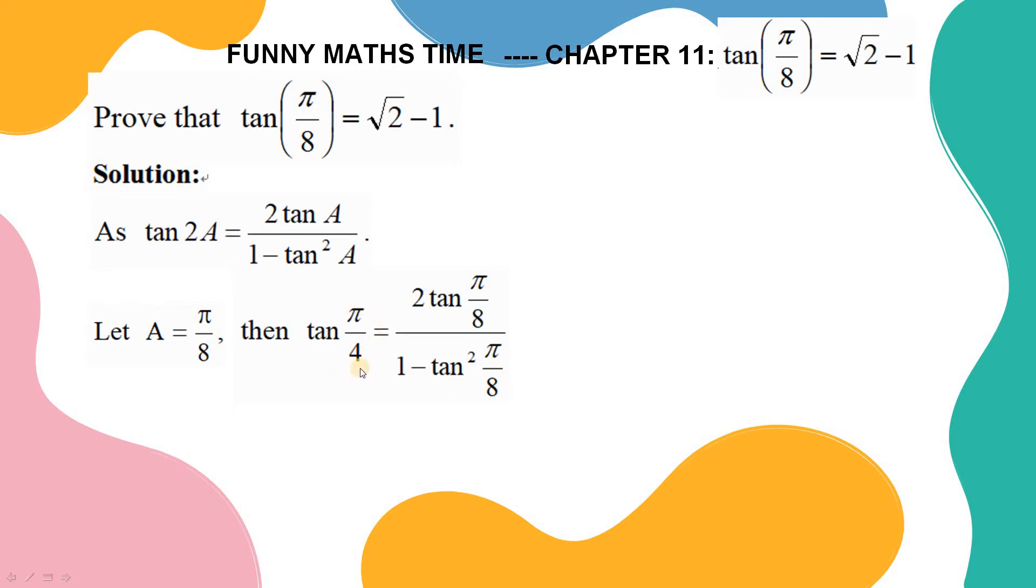For tangent pi over 4 is equal to 1. Multiply the denominator from the right to the left. We have 1 minus tangent squared pi over 8 equals 2 tangent pi over 8.